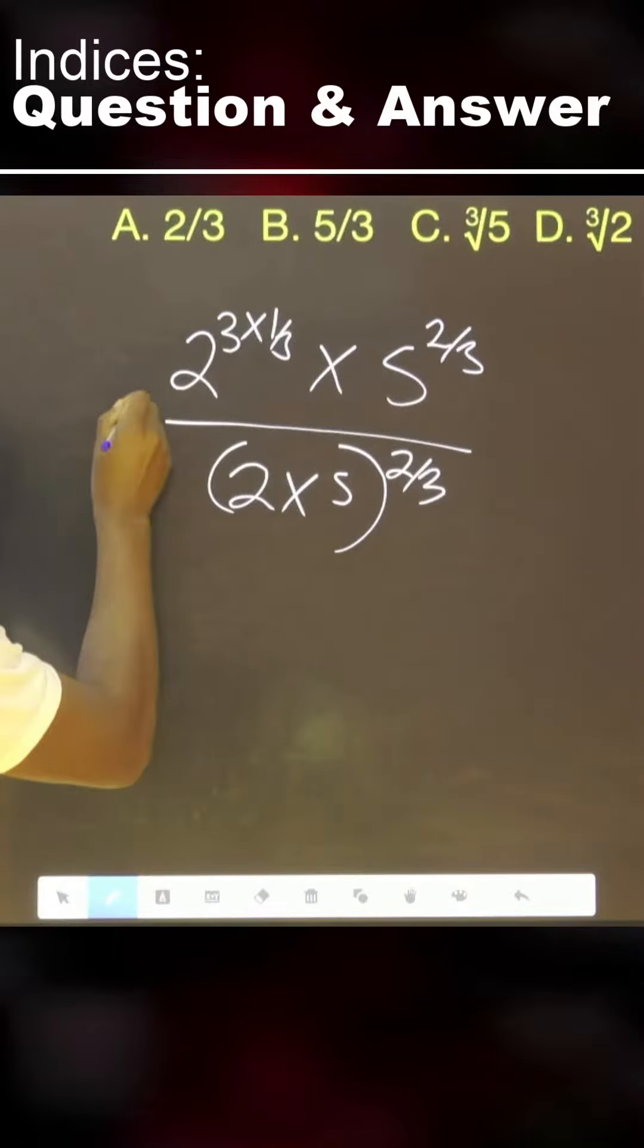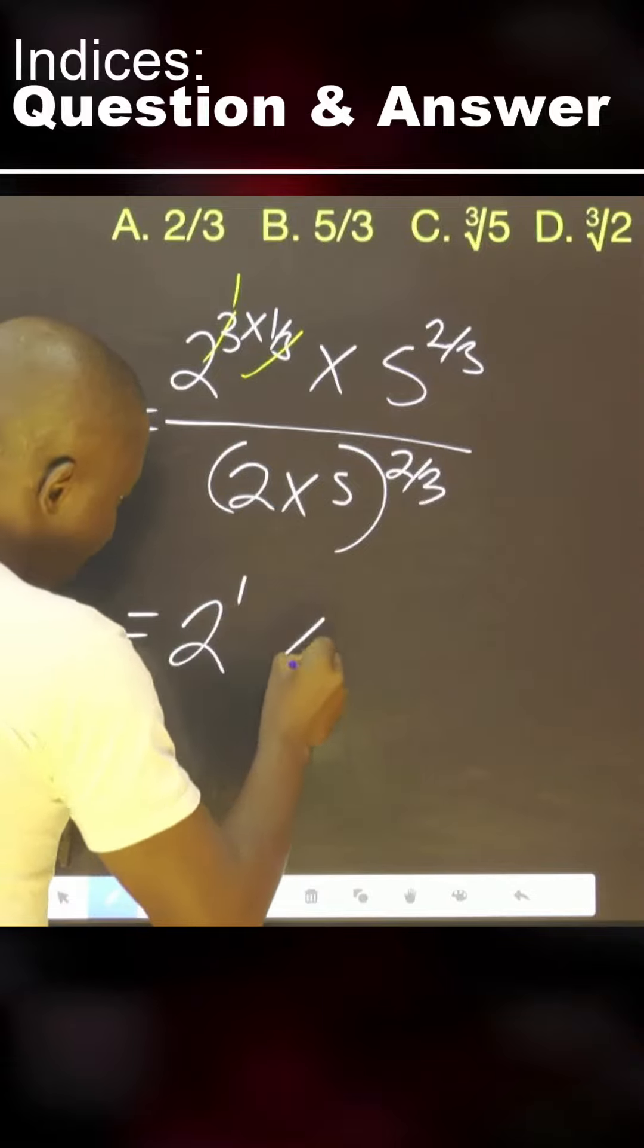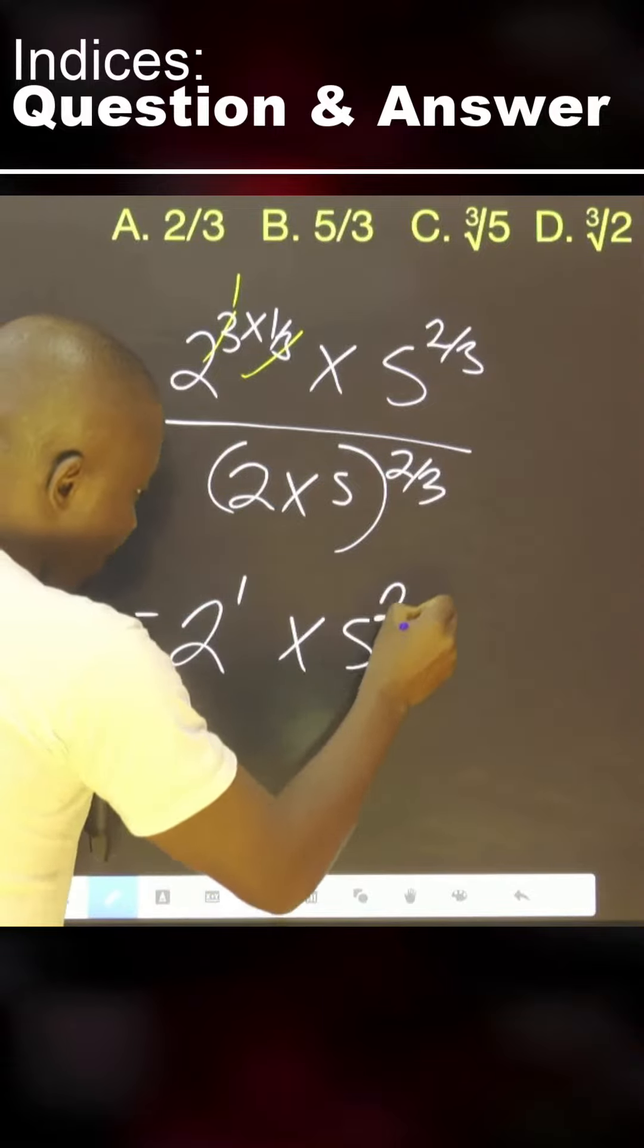If we continue, this and this, that is 1. 2 raised to the power 1 multiplied by 5, 2 over 3.